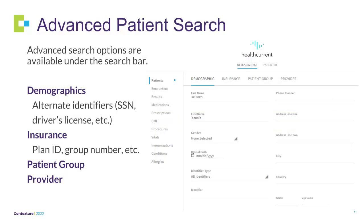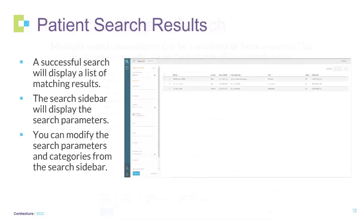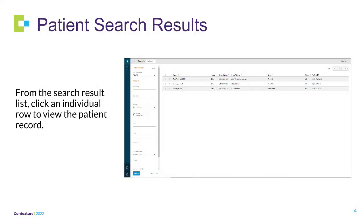Advanced search options are available under the search reasons bar, such as demographics, insurance, patient group, and provider. Multiple search parameters can be combined to form a search, and the parameters are shown at the bottom of the search page. A successful search will display a list of matching results. The search sidebar will display the search parameters, and you can modify them from the search sidebar. From the search result list, click an individual row to view the patient record.